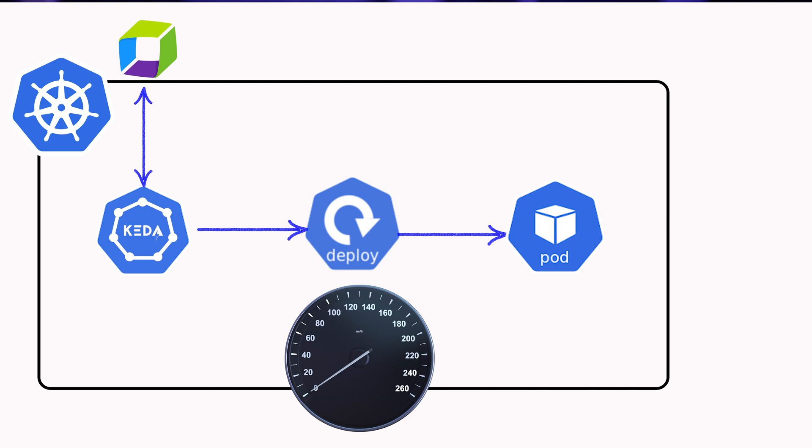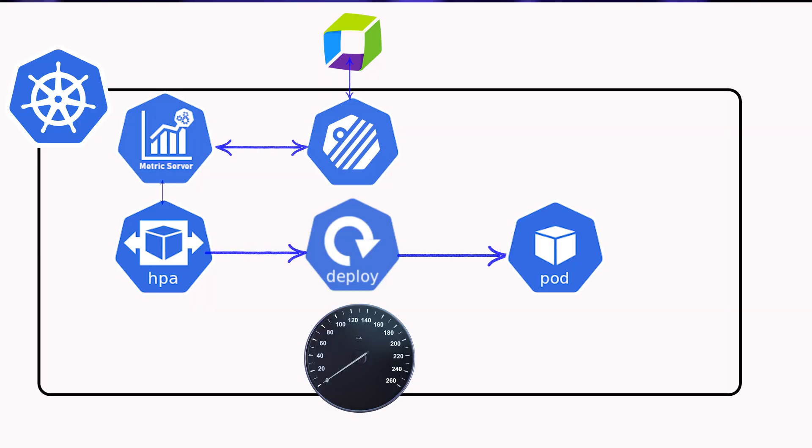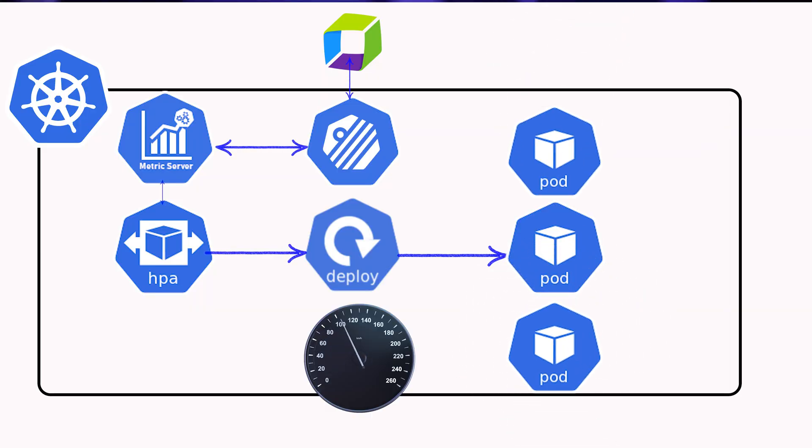That's why I always recommend using external metrics like actual incoming traffic — HTTP requests or gRPC request counts. But to do that, you need those metrics to be accessible from the Kubernetes Metric Server. If you're using Dynatrace, there are two options: KEDA, a CNCF project that scales workloads based on events and external metrics, and Captain, providing a metric server as an interface to let you send Dynatrace DQL queries straight into your cluster.